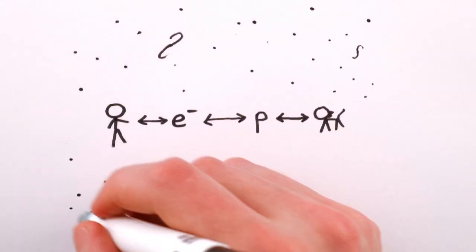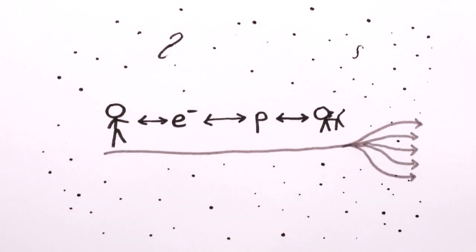Pretty much any time subatomic particles interact with each other, or with anything else, anywhere in the universe, there are multiple possible outcomes, which means a lot of branching of history. There may even be infinitely many branches!